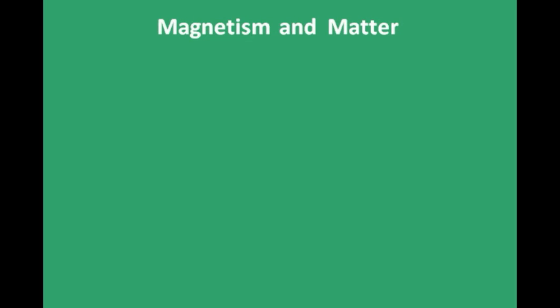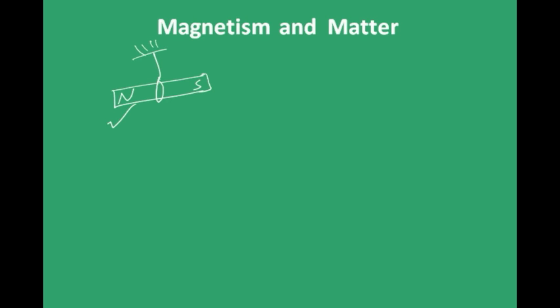A bar magnet is a magnet in bar shape with magnetic poles at its two ends. When you suspend this magnet freely, the end which points to the geographic north of Earth is called the North Pole, and the end which points approximately to the geographic south is called the South Pole.